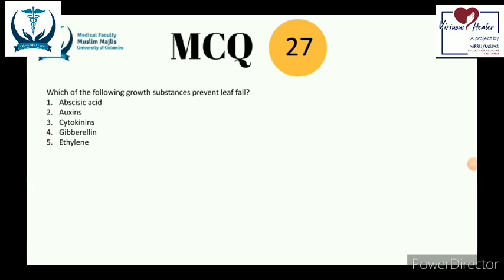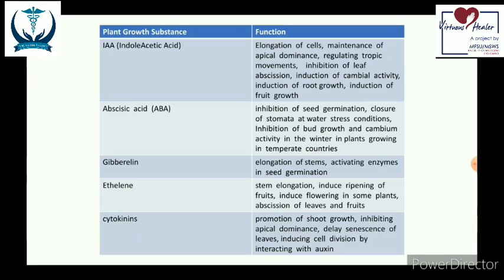Question number 27: which of the following growth substances prevents leaf fall — abscisic acid, auxins, cytokinins, gibberellins, or ethylene? You must be able to list the plant growth substances and their functions, as this commonly appears in MCQs rather than essay questions.